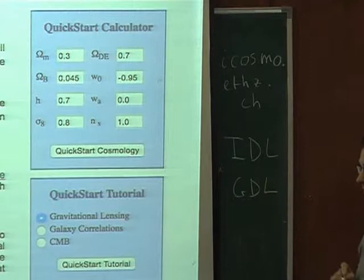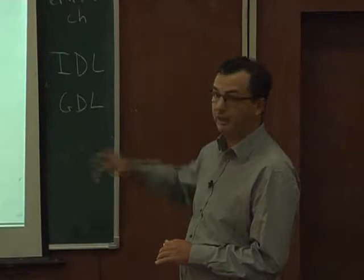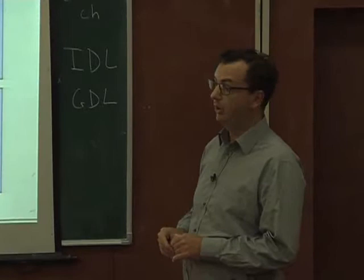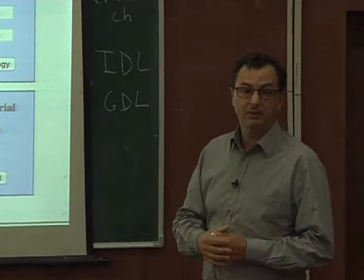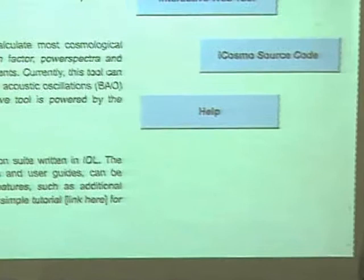However, you don't need the source code itself. I'll show you that you can go directly via a web browser and do a lot of the calculations directly interactively on the web, which is very convenient. If you quickly need some quantities like angular diameter distance, Hubble parameter, lensing power spectrum, or power spectrum, you can get it directly on the web. Go to this web page, click on cosmology tool, and you can either download the code or use your web browser.